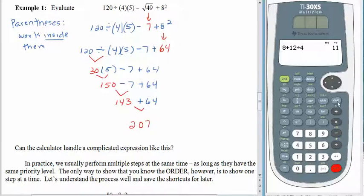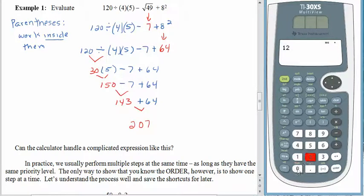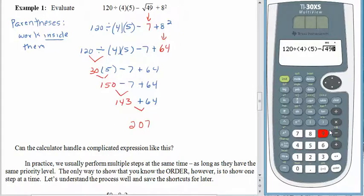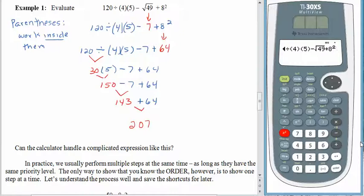Can the calculator handle something like this? Of course it can. Let's see — 120 divided by 4 times 5. The calculator knows that parentheses next to each other mean multiplication. Minus square root, accessed with the second key, of 49. We don't want that plus underneath the radical, so use our back arrow to delete it and use the right arrow to come out of the square root. Plus 8 squared. Make sure what you're typing looks like what you have on paper. Press enter — same answer twice, 207!